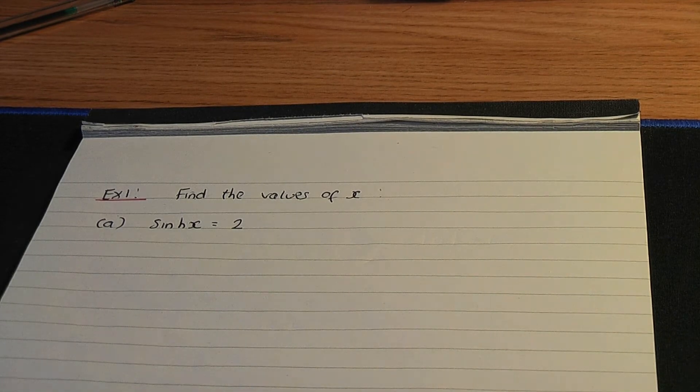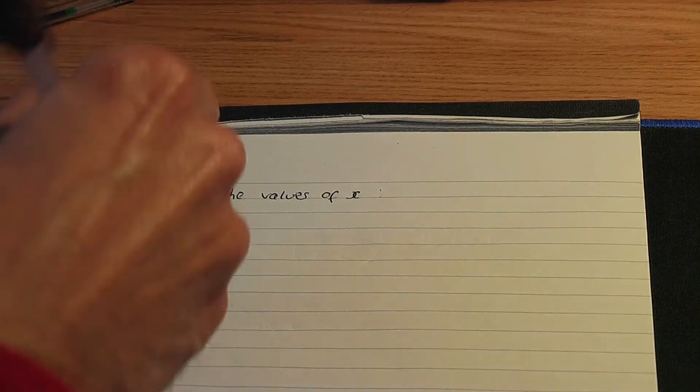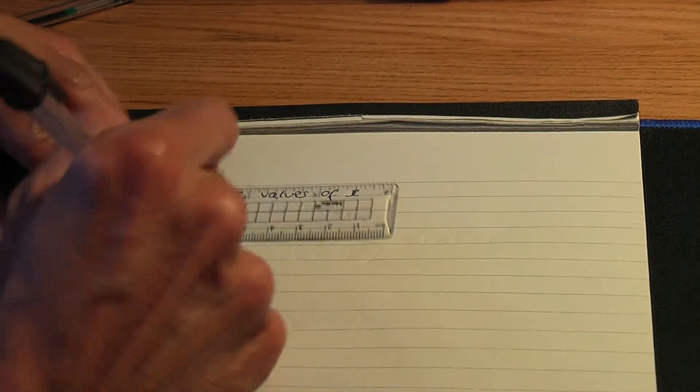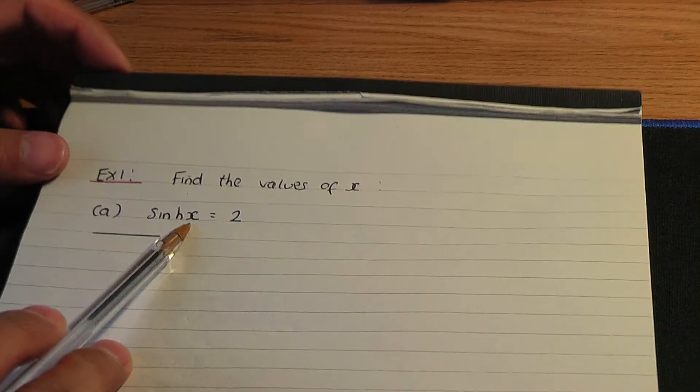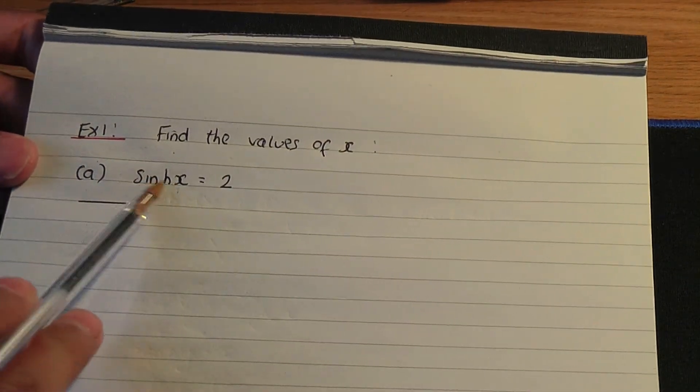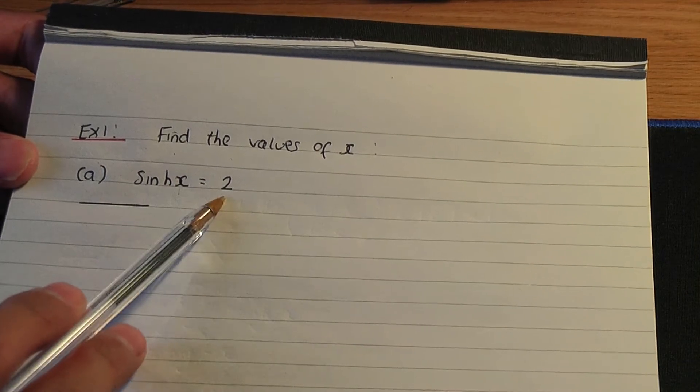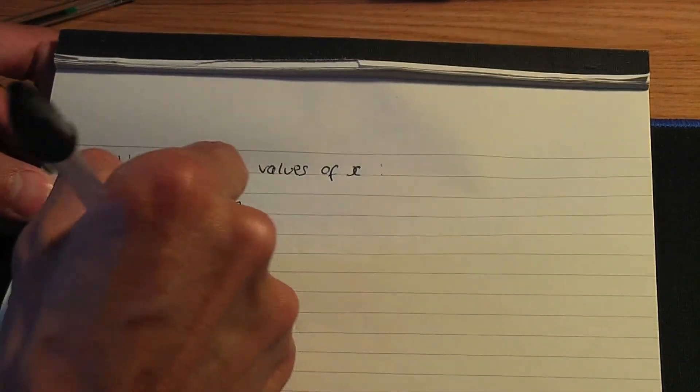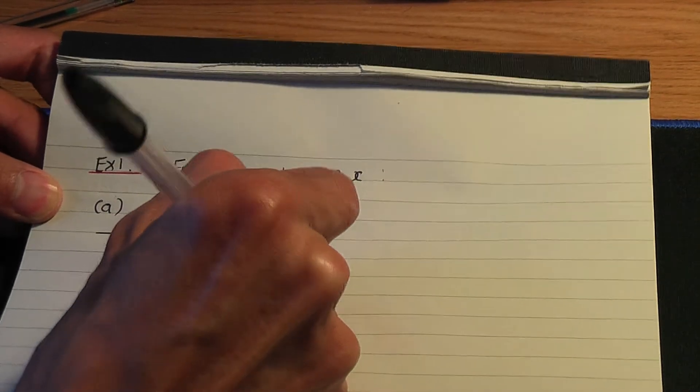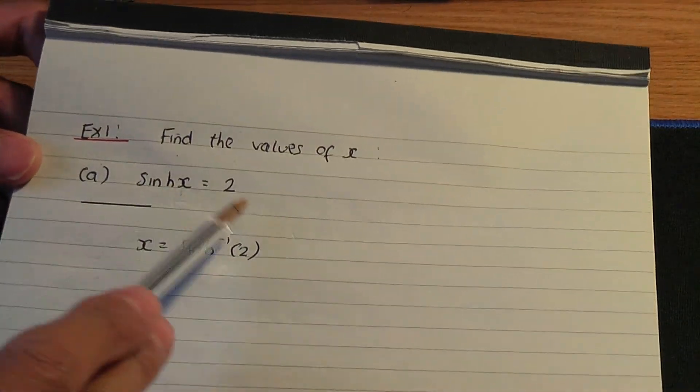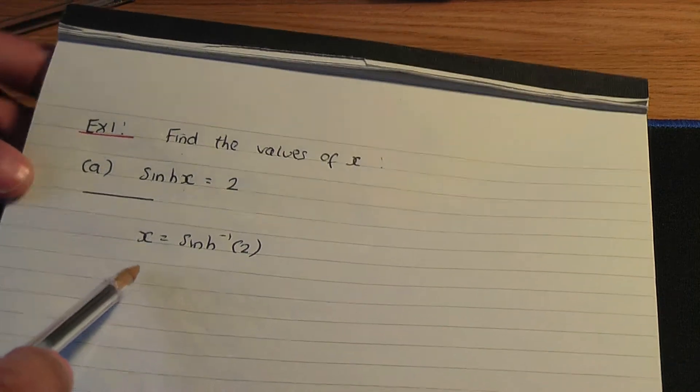In order to solve this equation, let's go through it. To calculate x, it's quite straightforward. All you need to do is to take the inverse hyperbolic sine of 2. So x will be the inverse hyperbolic sine of 2 by taking an inverse on both sides.